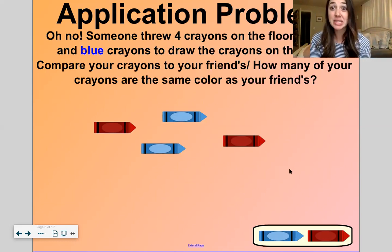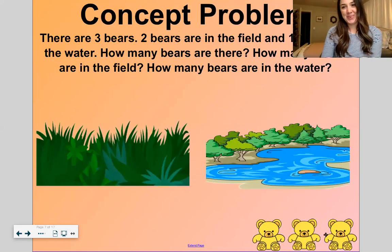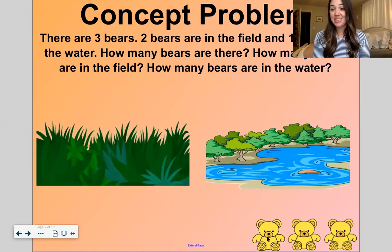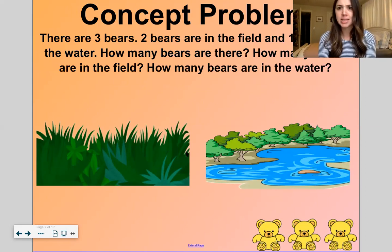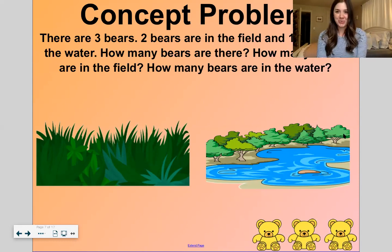Ooh. I see three little bears down here. I see a field. Looks like some tall grass. And I see a pond with some evergreen trees and some deciduous trees. Ooh, cool. So there are three bears. One, two, three.